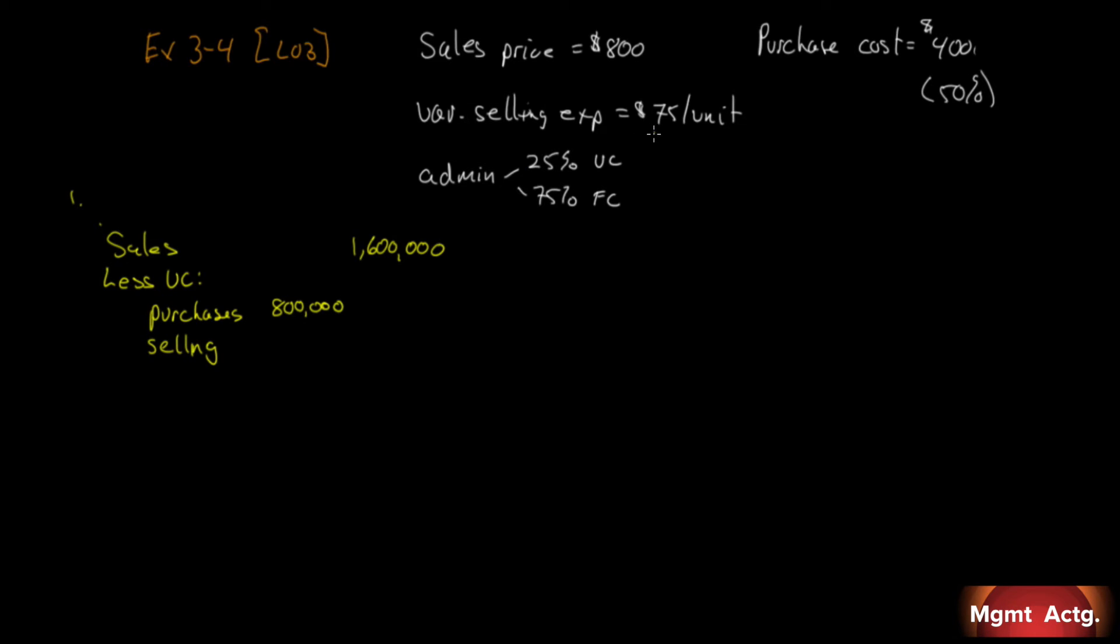Now we have variable selling expense at $75 per unit. We need to know how many units. We sell them for $800, our sales are $1.6 million. If we divide $1.6 million by $800, we get 2,000 guitars. With a variable expense of $75 per guitar, we have $150,000 for variable selling expense.